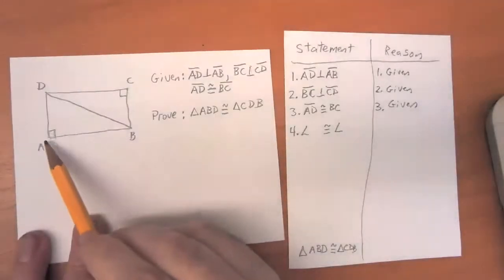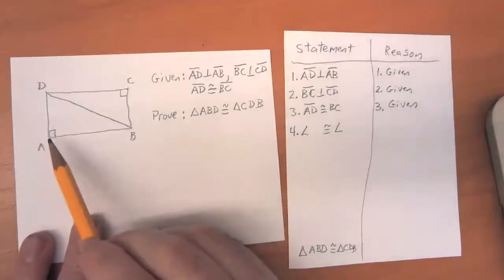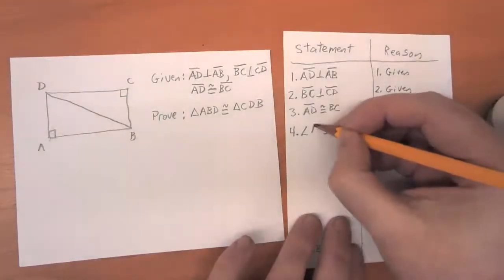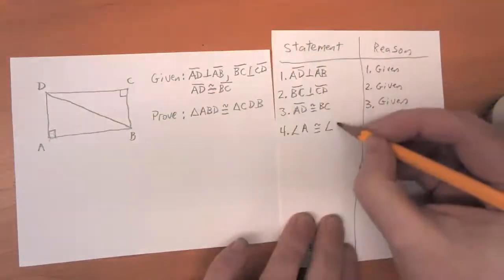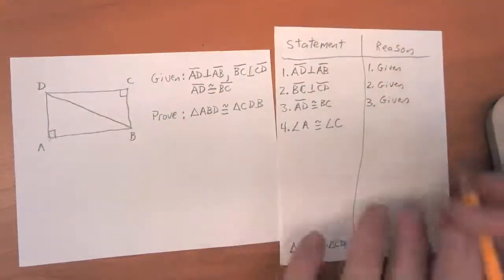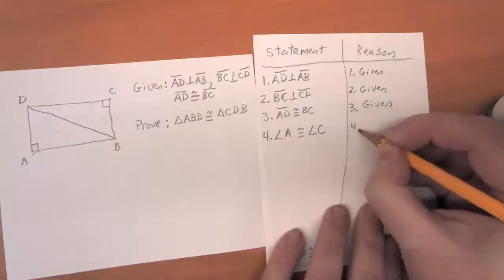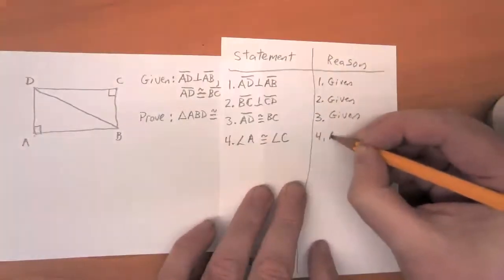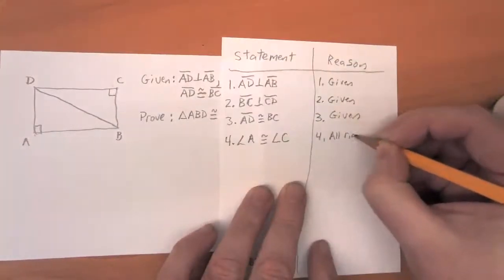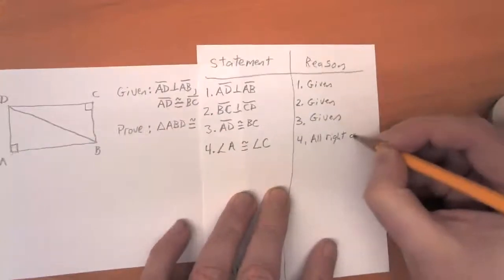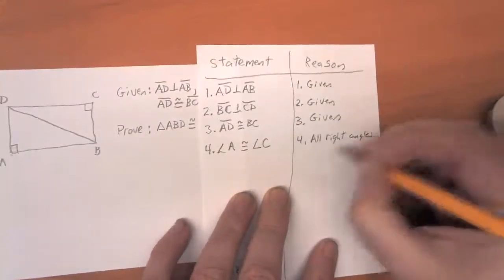We can, because there's only one angle that has A as its vertex in this diagram. So we can just say angle A, and the same thing is true for angle C. And the reason for this is because all right angles are congruent.